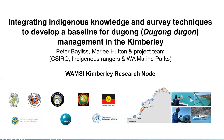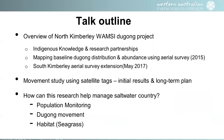This project looked at Dugong distribution and abundance across the Kimberley, with a key component on integrating Indigenous knowledge into the survey techniques, information development, and information sharing. The overview covers: Indigenous knowledge and developing research partnerships; mapping baseline information on Dugong distribution and abundance across the northern Kimberley, extended into the southern area; a component on Dugong movement using satellite tags; and a brief outline of how this research can help manage saltwater country across population monitoring, Dugong movement, and habitat.